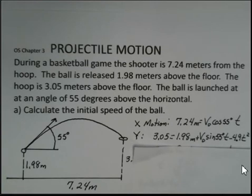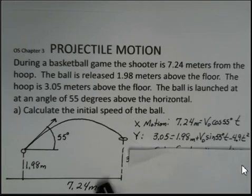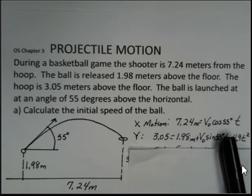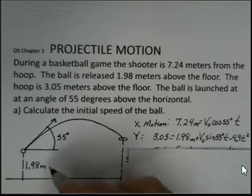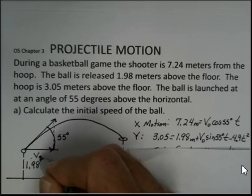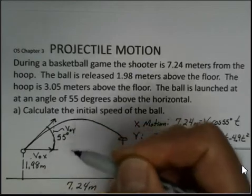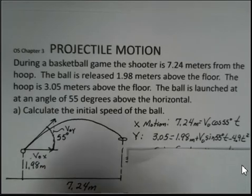Let's take a look at our understanding of motion. In the x direction, distance equals rate times time. The x velocity is constant when we ignore air resistance, and 7.24 meters as the range will be found by V0 cosine 55 degrees multiplied by time. If I create a right triangle, the horizontal side is V0x and the vertical side is V0y.